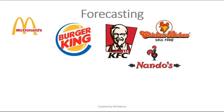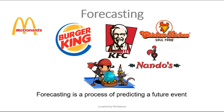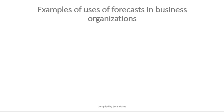The answer is forecasting. Forecasting is a process of predicting a future event. For example, if McDonald's Braamfontein sold 5,000 burgers last week, they assume they'll sell approximately 5,000 this week. The forecast isn't always perfect — it might be more or less — and that's where forecasting error comes in.